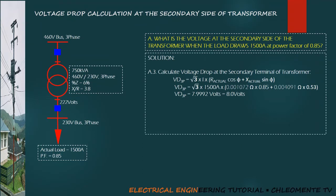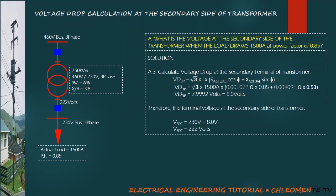Then using the voltage drop formula, voltage drop in 3 phase equals square root of 3 multiply by actual load current multiply by the sum of actual resistance cosine theta and actual reactance sine theta, which yields 7.9992 volts or 8 volts.